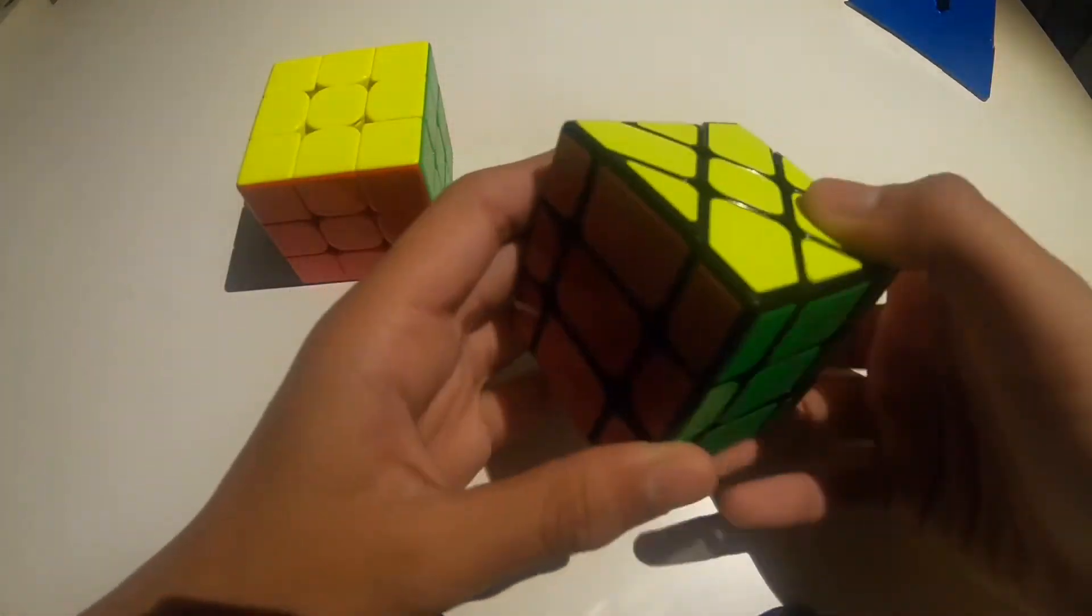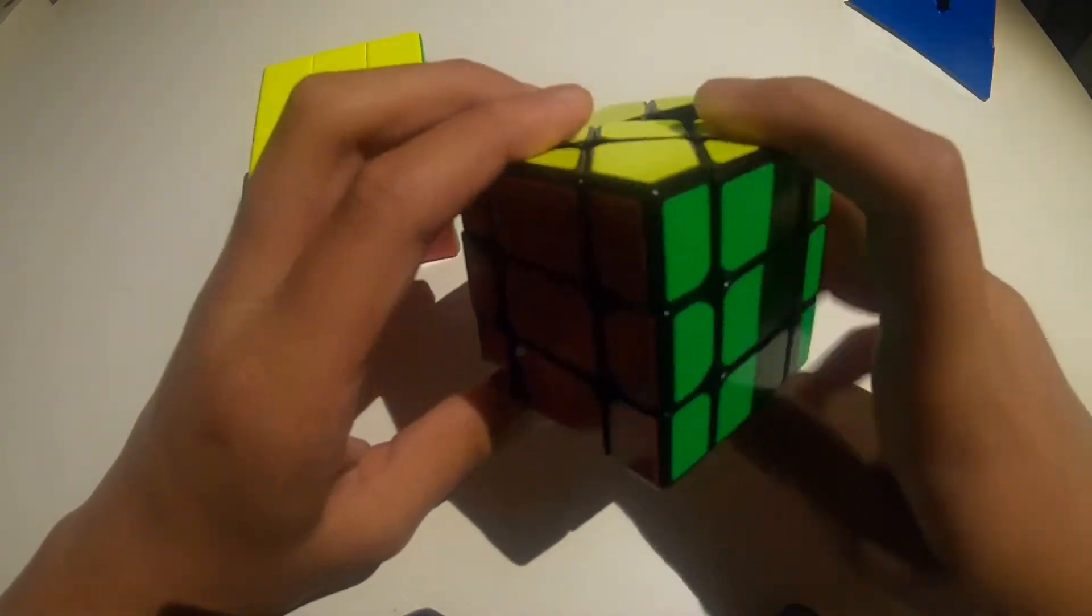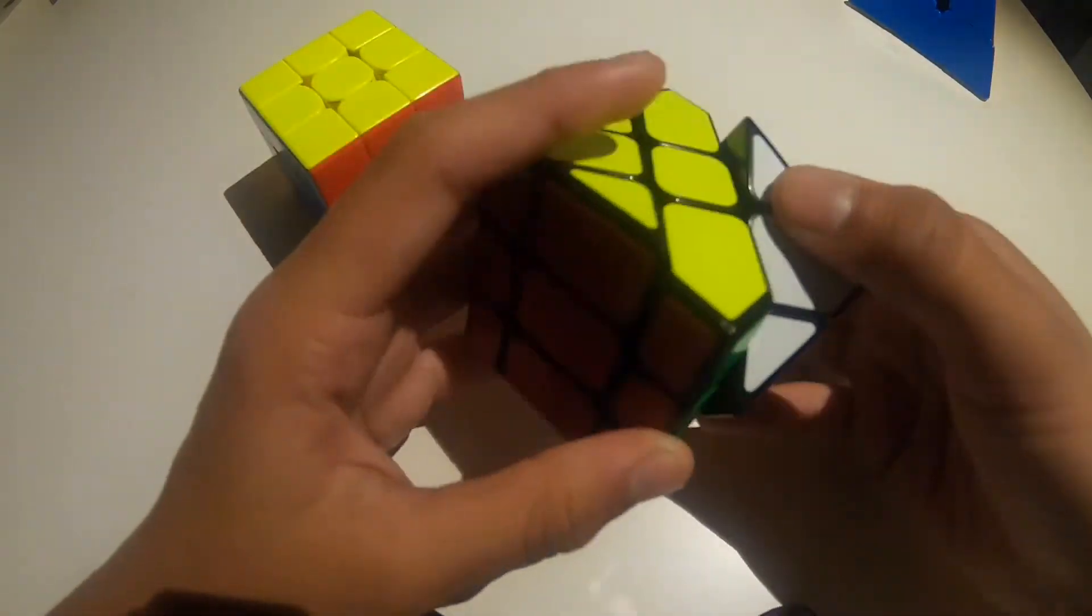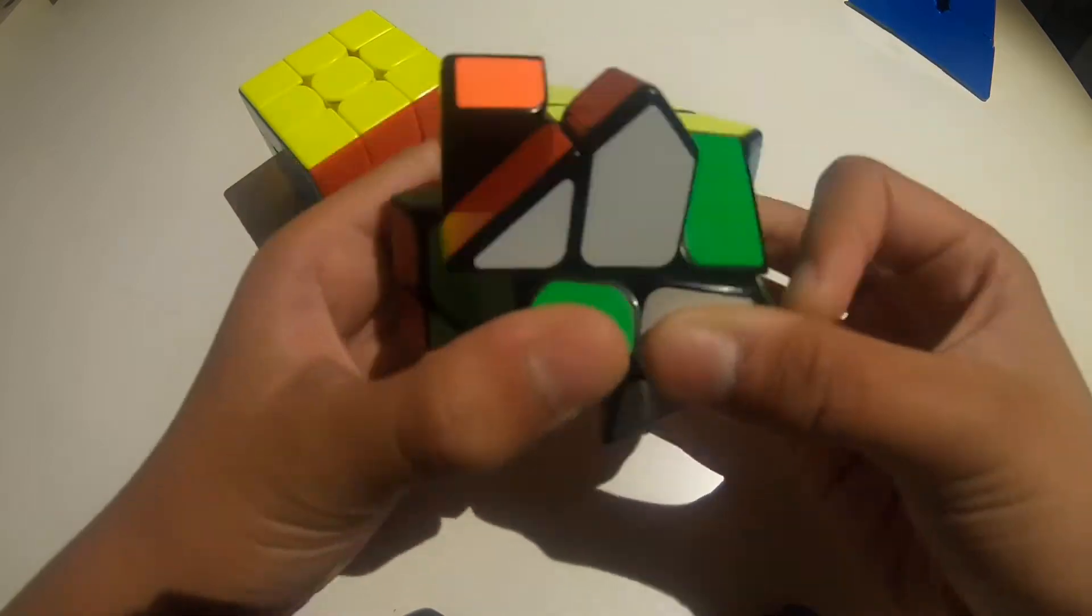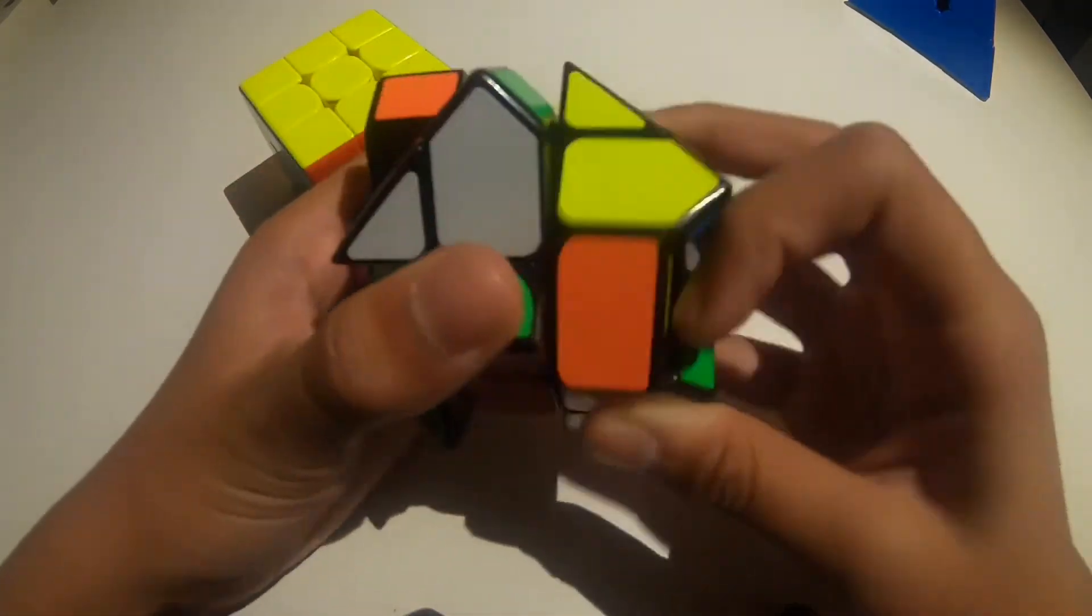So you can turn it like this, up, down, front, back, left, and right side. Here is a J perm on the fish cube. And it's basically like that.